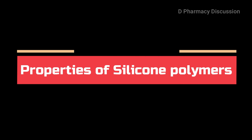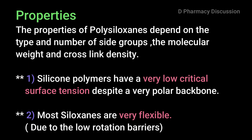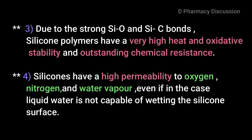The properties of siloxanes depend on the type and number of side groups, the molecular weight, and cross-link density. Silicon polymers have a very low critical surface tension despite a very polar backbone. Most siloxanes are very flexible due to the low rotation barrier. Due to the strong Si-O and Si-C bonds, silicon polymers have very high heat and oxidative stability and outstanding chemical resistance. Silicones also have high permeability to oxygen, nitrogen, and water vapor, even though liquid water is not capable of wetting the silicon surface.